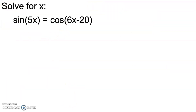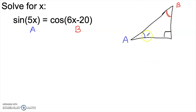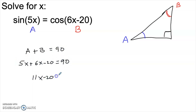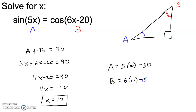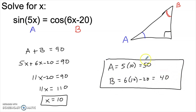Looking back at our problem: if the sine of 5x equals the cosine of 6x minus 20, that means angle A and angle B can be placed in the same right triangle, so A plus B equals 90. That gives us 5x plus (6x minus 20) equals 90, so 11x minus 20 equals 90, and solving for x we get x equals 10. A would be 50 and B would be 40 — and notice that 50 and 40 are complements, which is what's driving the solution.